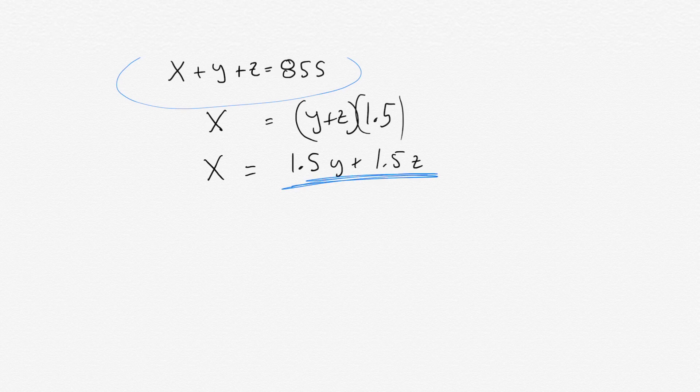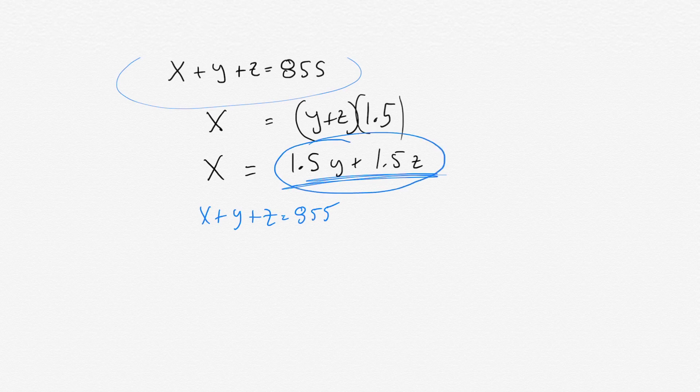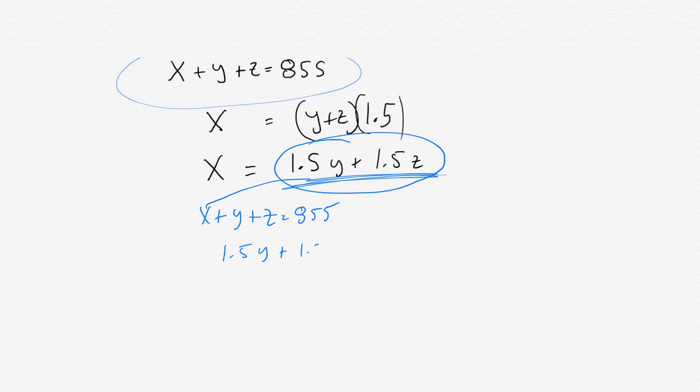So let's plug in 1.5Y plus 1.5Z into that equation. So we had X plus Y plus Z equals 855. And then we're going to plug this in for X. So we get 1.5Y plus 1.5Z plus Y plus Z equals 855.